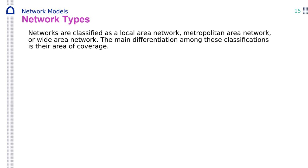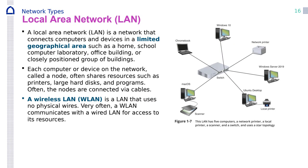Networking types: we have different types of network according to size and geography. We have local area network (LAN), metropolitan area network (MAN), and wide area network (WAN). The main differentiation is the area of coverage. The smallest is LAN — examples are home, school, lab, office building, a group of closely positioned buildings. Each computer or device on the network is called a node, and often shares resources such as a printer or hard disk.